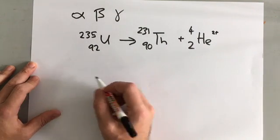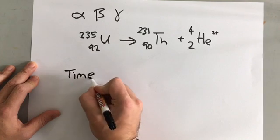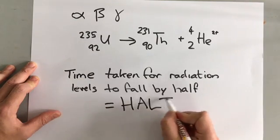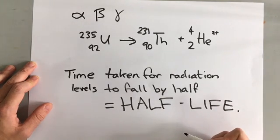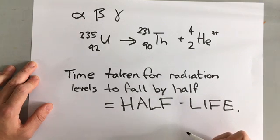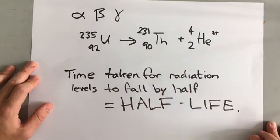Now the time taken for the levels of radiation to fall by half is called the half-life. The half-life of any radioactive isotope can be anywhere from milliseconds to thousands of years. It completely depends on the type of radiation and the type of isotope that we are talking about.